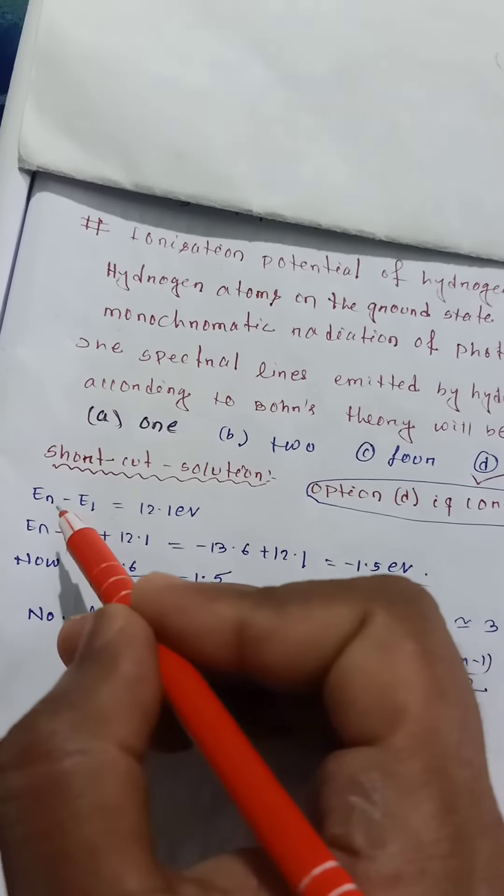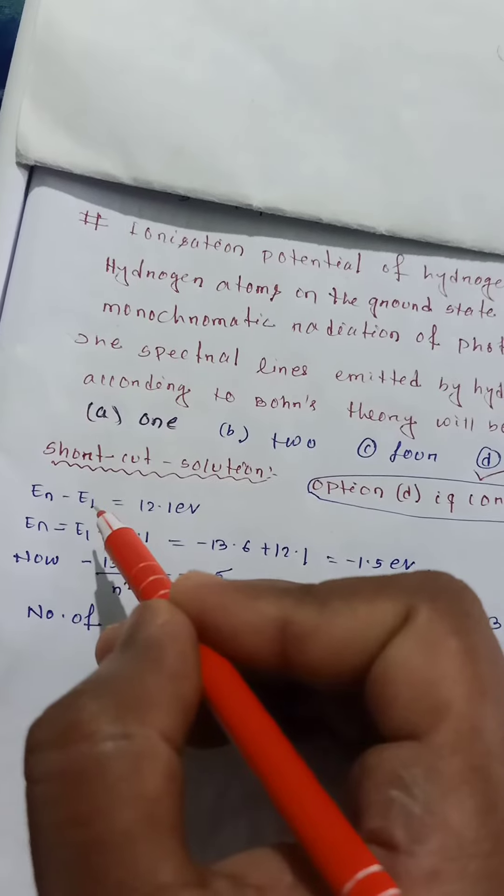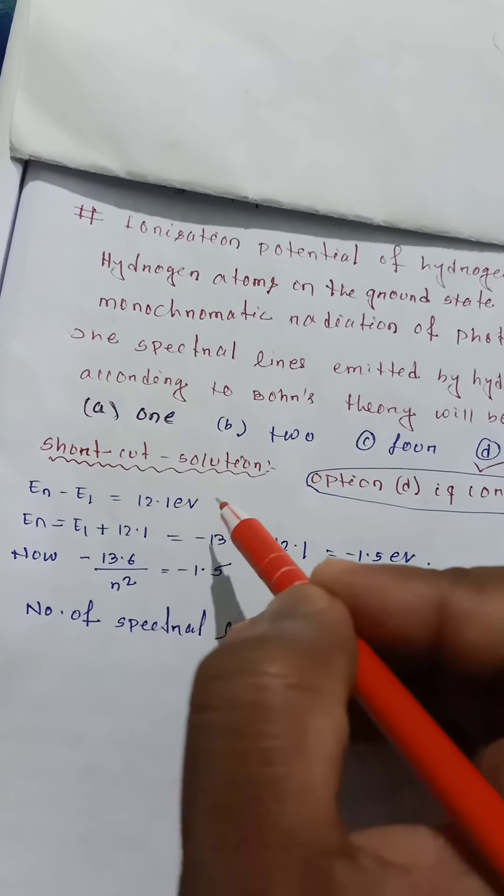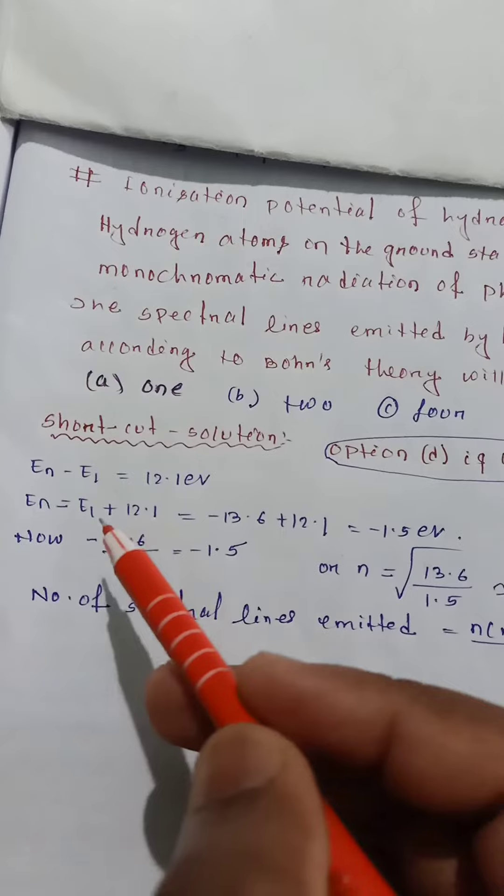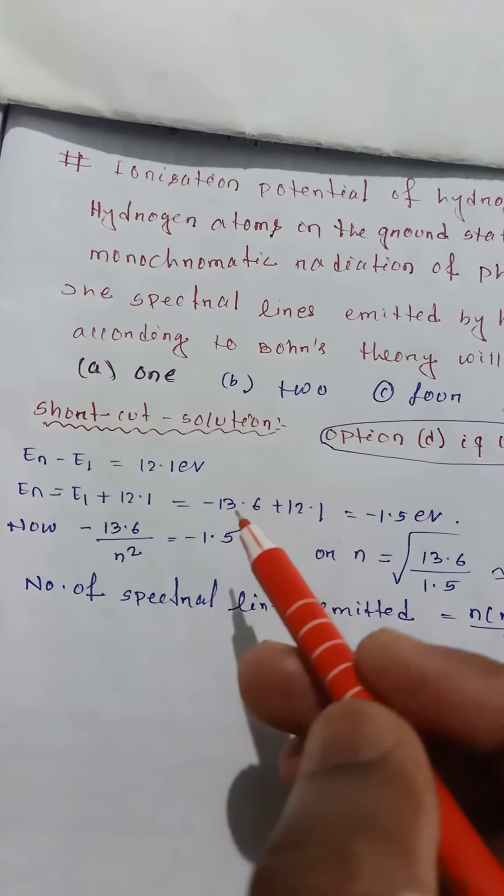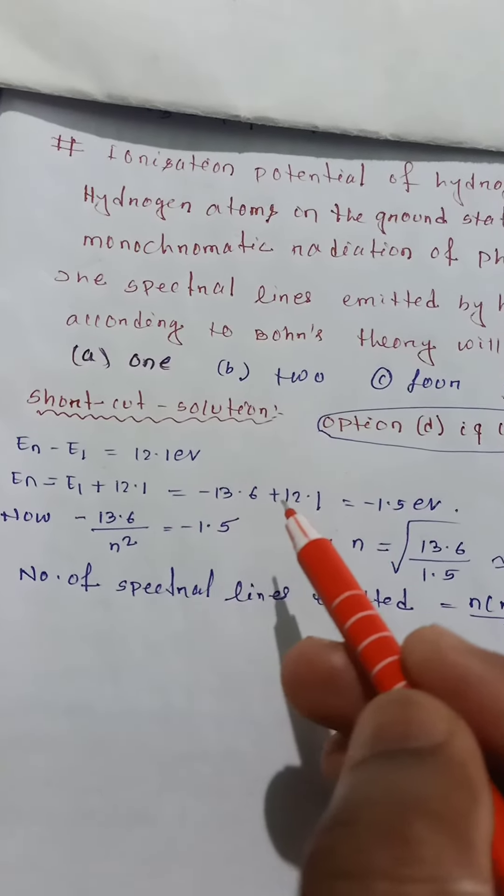En minus energy difference is equal to higher state minus ground state. First excited state energy is 12.1 electron volts. En is equal to E1 plus 12.1, which is equal to minus 13.6 plus 12.1.